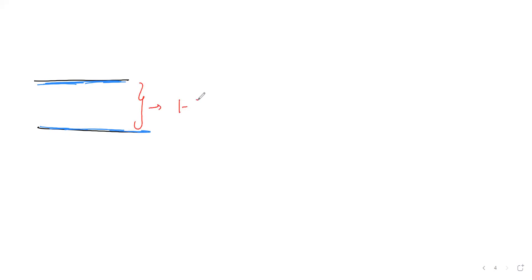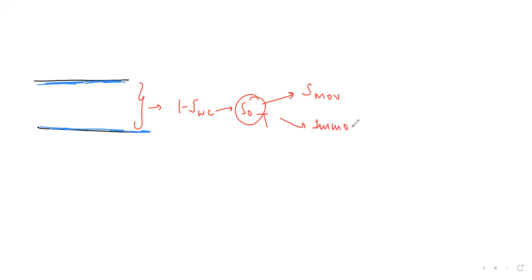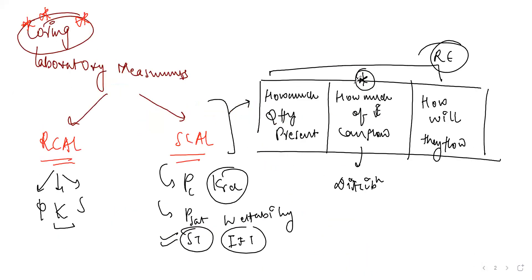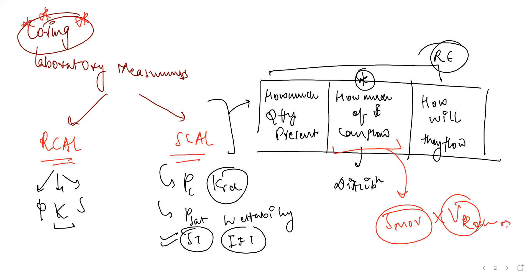One minus connate water saturation (1 - S_wc) is ideally the total oil saturation, S_o. From this total saturation, some part is movable and some is immovable. We are interested in the movable part because that can be recovered. S_movable multiplied by the pore volume of the rock gives you a high-level estimate of how much oil is there.